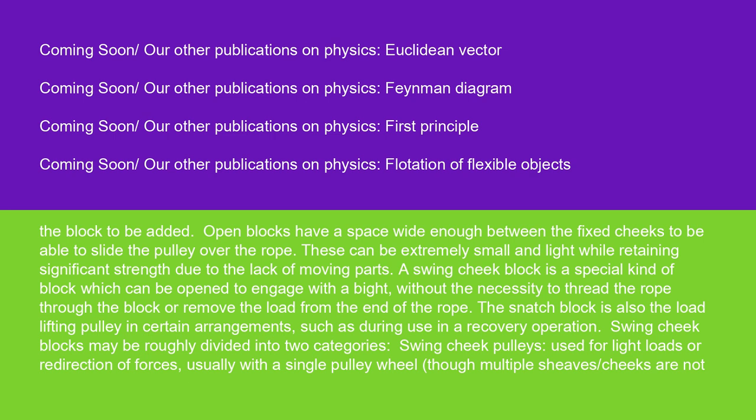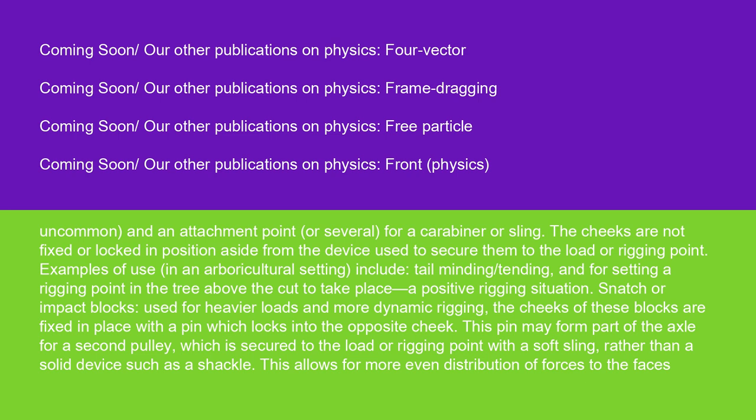Swing cheek blocks may be roughly divided into two categories. Swing cheek pulleys: Used for light loads or redirection of forces, usually with a single pulley wheel, though multiple sheaves/cheeks are not uncommon, and an attachment point or several for a carabiner or sling. The cheeks are not fixed or locked in position aside from the device used to secure them to the load or rigging point. Examples of use in an arboricultural setting include tail minding/tending and for setting a rigging point in the tree above the cut to take place, a positive rigging situation.